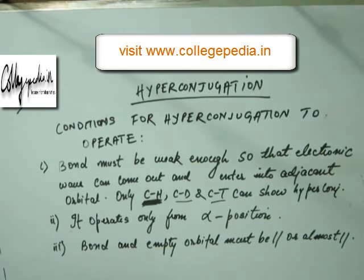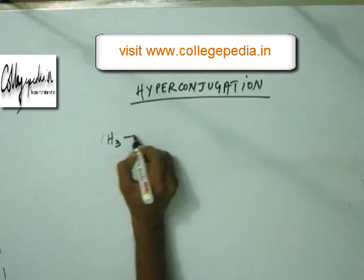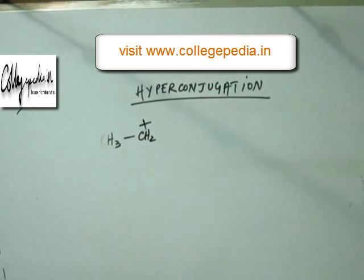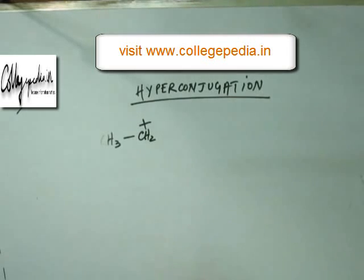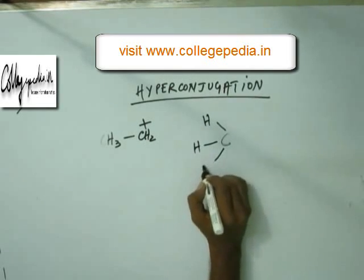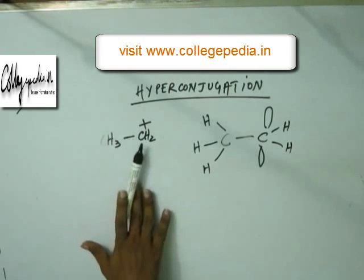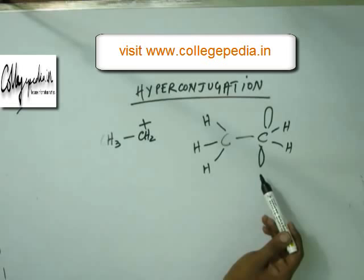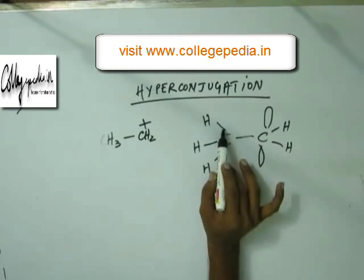Now let's solve some problems to understand further how hyperconjugation is ultimately used in chemistry. Suppose this intermediate is formed in any kind of reaction. I have to look for the stability of this intermediate, so I have to look for hyperconjugation. To draw the orientation of the bond, remember: plus charge means empty orbital — the electron has been taken away from that atom, so the orbital is empty. Although this seems to be planar, it is not. This carbon is sp3 hybridized and tetrahedral, while the carbocation carbon is trigonal planar with its orbital perpendicular to the plane of those three bonds.